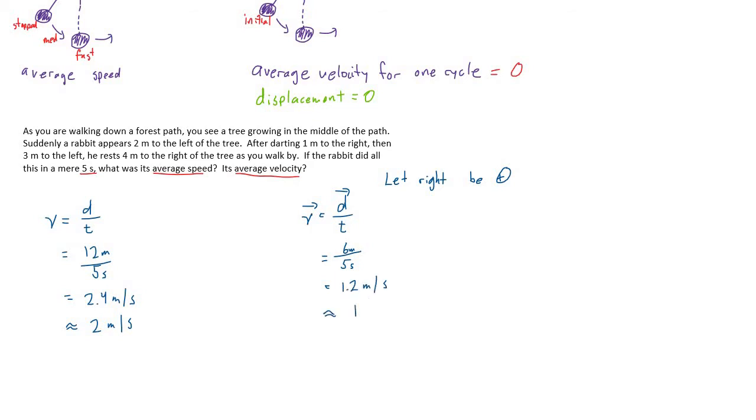Again, round to one significant digit: 1 meter per second. But in our final answer, don't forget to give it a direction. Since this is positive, it means to the right, as I defined.